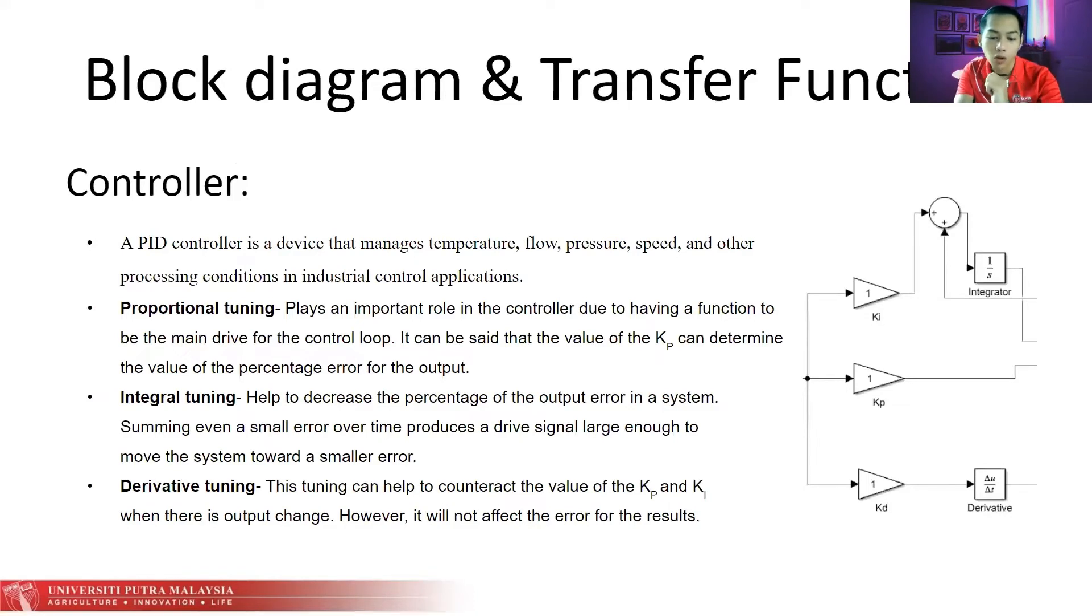I will explain about the first block diagram which is the controller and its transfer functions. A PID controller is a device that manages temperature, flow, pressure, speed, and other processing conditions in industrial control applications. Proportional tuning, derivative, and integrative tuning are the three basic components of a PID controller. The function of proportional tuning plays an important role in the controller by being the main drive for the controller. The value of Kp determines the value of the percentage error for output.